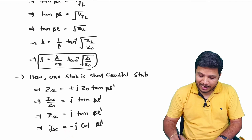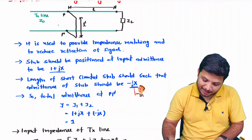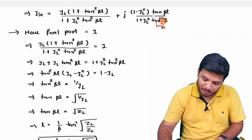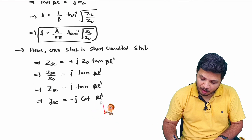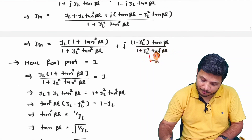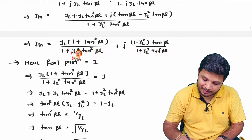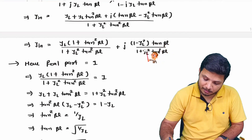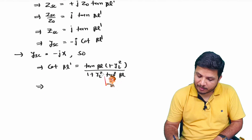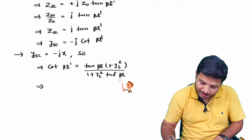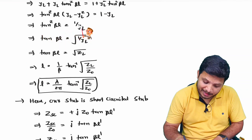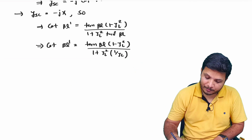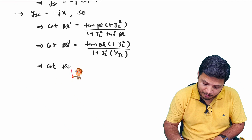This YSC is Y2, which must equal minus jx. Separating real and imaginary parts, cot βL' = x. Substituting tan²βL = 1/YL and using YL = 1/ZL, we get: cot βL' = tan βL·(1 - YL), and since tan βL = 1/√YL = √ZL, further simplification gives tan βL' = √(ZL·Z0) / (ZL - Z0).